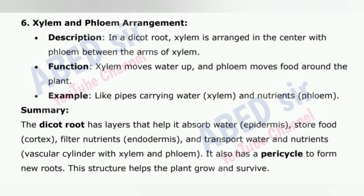6. Xylem and phloem arrangement — in a dicot root, xylem is arranged in the center with phloem between the arms of xylem. Function: xylem moves water up and phloem moves food around the plant. Example: like pipes carrying water, xylem, and nutrients, phloem. Summary: the dicot root has layers that help it absorb water at the epidermis, store food at the cortex, filter nutrients at the endodermis, and transport water and nutrients through the vascular cylinder with xylem and phloem. It also has a pericycle to form new roots. This structure helps the plant grow and survive.